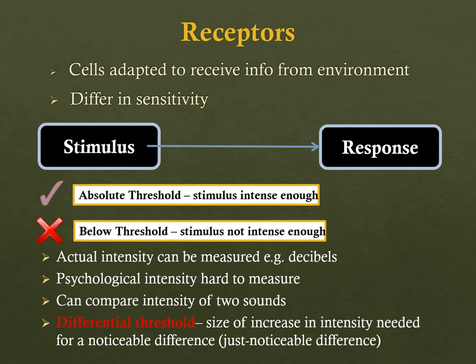There is a critical point called the absolute threshold, which determines whether the stimulus is intense enough. If the stimulus is below the threshold, it will not generate a response. In addition to a certain level of intensity, a stimulus has to act on a receptor for a certain length of time in order to activate it.